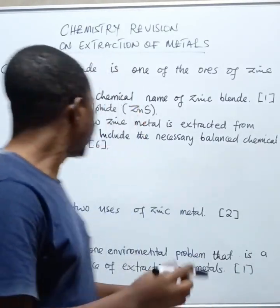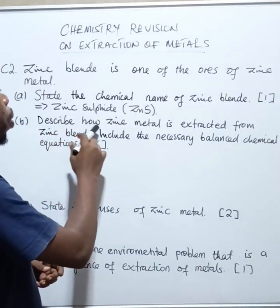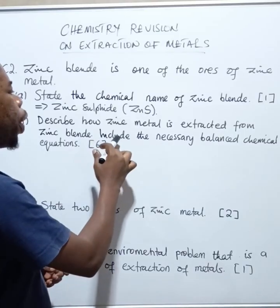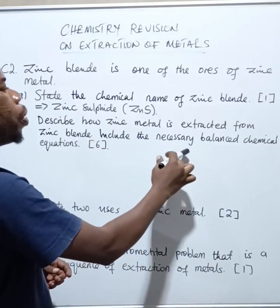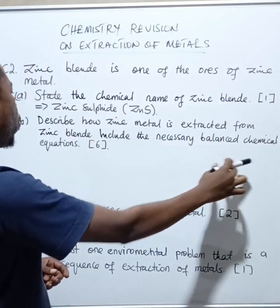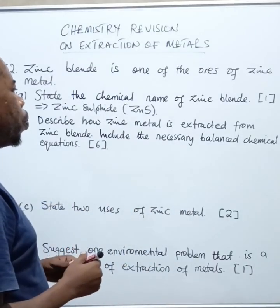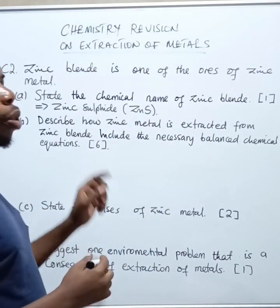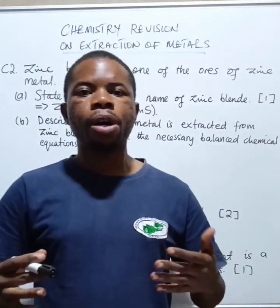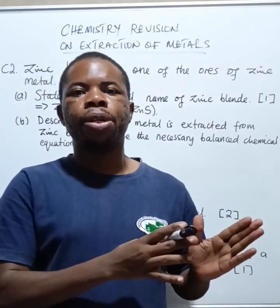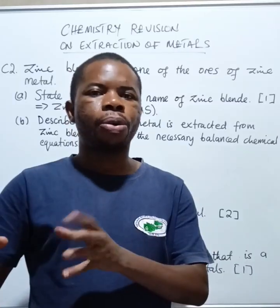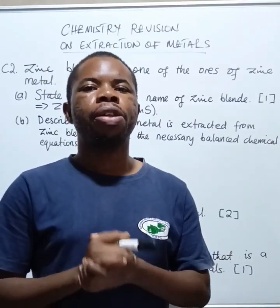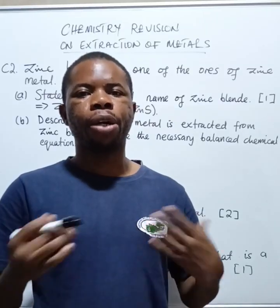The next question says: describe how zinc metal is extracted from zinc blende. Include the necessary balanced chemical equations. So we will describe how zinc metal is extracted from the ore zinc blende and we also have to include the necessary chemical equations. This question is worth six marks.